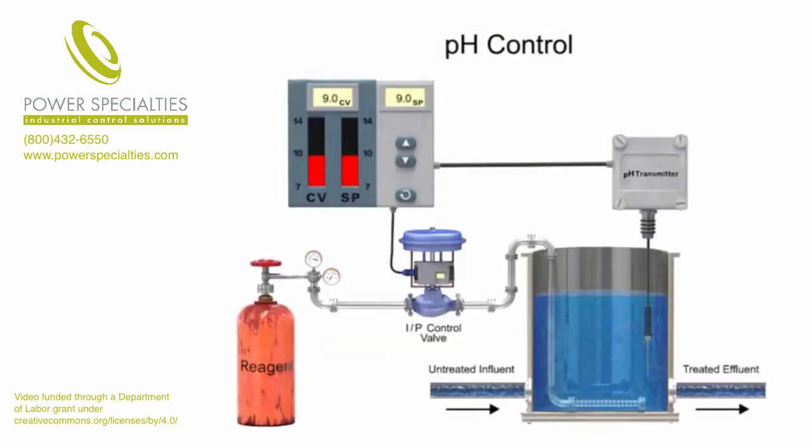Accurately applying the correct amount of reagent to an acid or base solution can be challenging due to the logarithmic characteristics of pH reaction in a solution. Implementing a closed-loop control system maintains the pH level within a certain range and minimizes the degree to which the solution becomes acidic or alkaline.